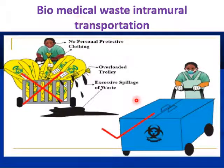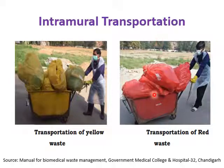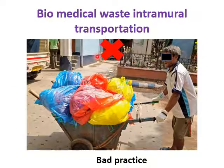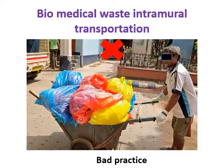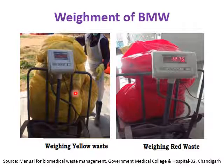For intramural transportation of biomedical waste from the point of generation to the central storage area, appropriate carts or trolleys are used. The handler must wear personal protective equipment, trolleys must not be overloaded, and waste must be completely covered. At the central storage area, waste is weighed — how much yellow waste and how much red waste has been generated must be recorded.